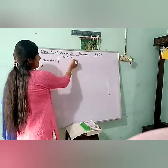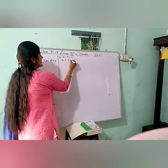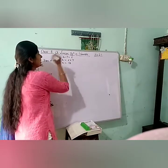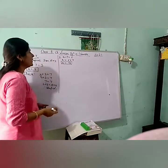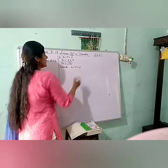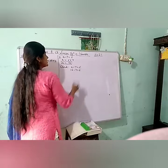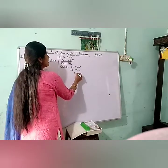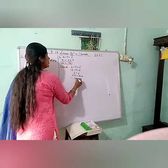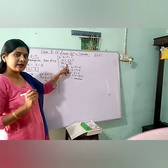Next is x minus 7 is equal to 6. Moving minus 7 to the right hand side, it becomes plus, so 6 plus 7 gives x equals 13. This is our solution. Now checking: substituting 13, we get 13 minus 7 is equal to 6, which gives 6 equals 6. LHS is equal to RHS — therefore verified.